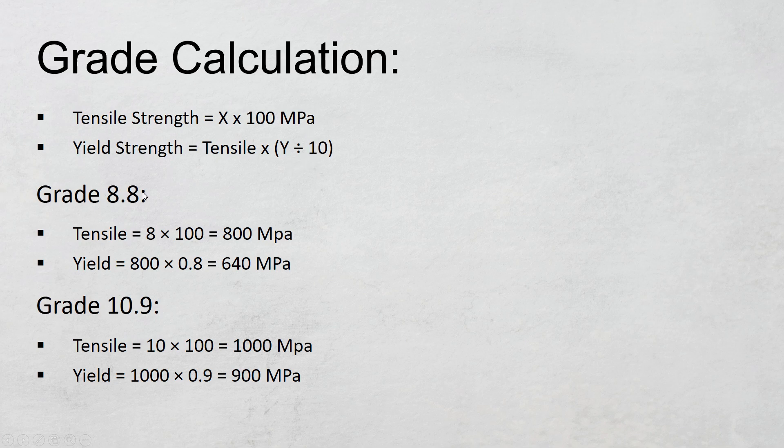Let's take this example. Let's say I have a bolt here of Grade 8.8. The first number is 8—this is X. You first simply multiply this number by 100, and when you multiply 100 by 8 you will get 800. So the tensile strength of this bolt is 800 MPa.